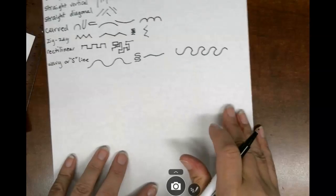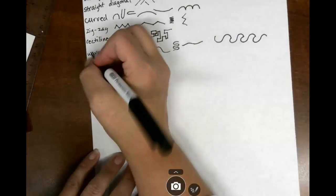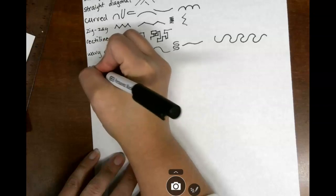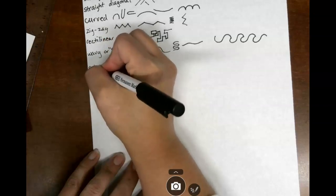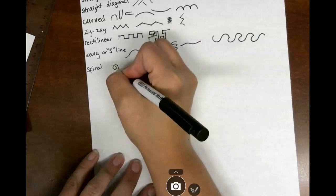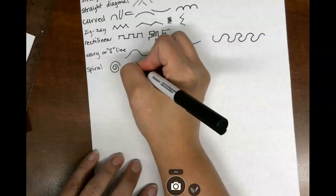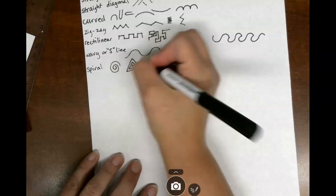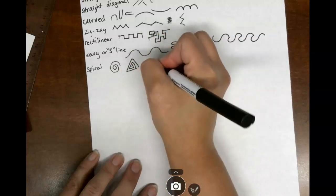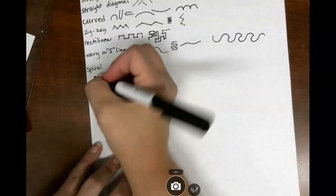All right, the last line that we're going to talk about in general is a spiral line, S-P-I-R-A-L. And this is pretty much what it says, a spiral line. It can come in any kind of shape, it's still a spiral. There we go, we're going to draw a line here.